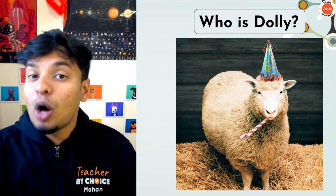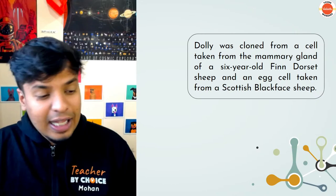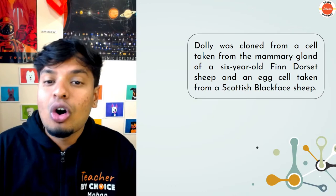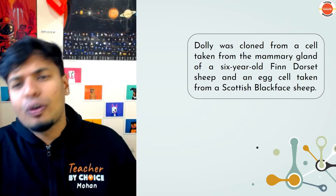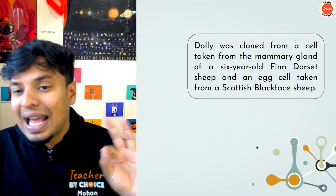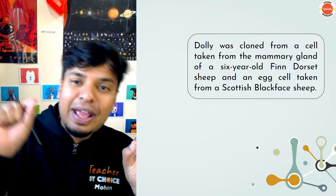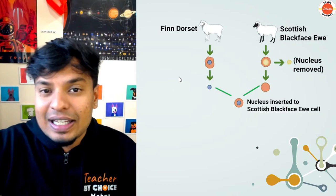Dolly was the first mammal to be cloned from an adult cell — they made an exact copy of one sheep. Dolly was cloned from a cell taken from a six-year-old Fin Dorset sheep, a specific breed. The cell was taken from the mammary gland — where the sheep gives milk. They also took one egg, the female gamete, from another sheep — the Scottish Black Face.